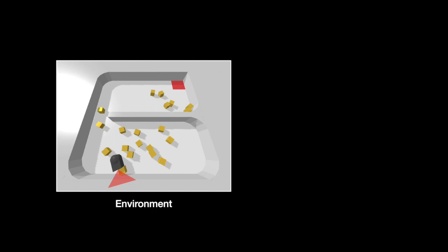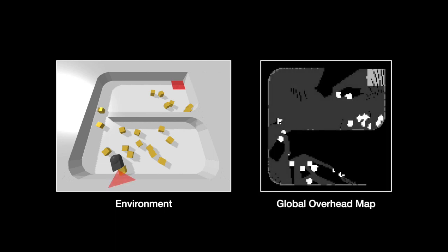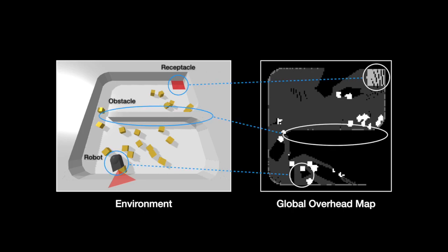We train our agent in a PyBullet simulation environment. As the agent moves around in the simulation, it uses a forward-facing virtual camera to perform online mapping. It starts with a blank map and gradually builds up a global overhead map, which contains everything it has observed.